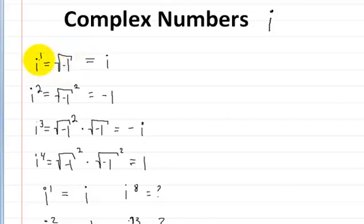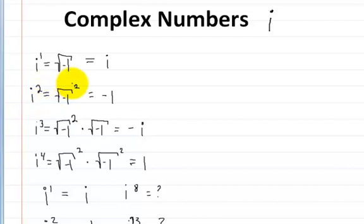i to the first power is just i — equal to itself. When you square i, the square and the square root cancel, and you're left with negative 1.